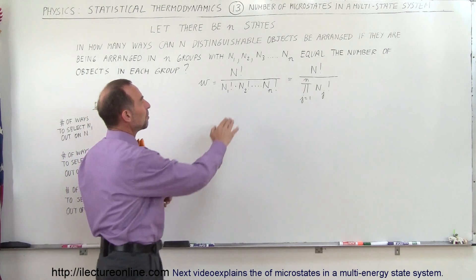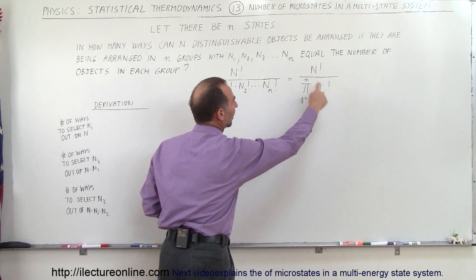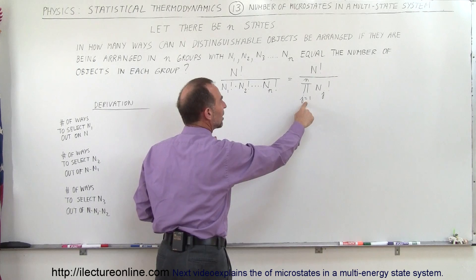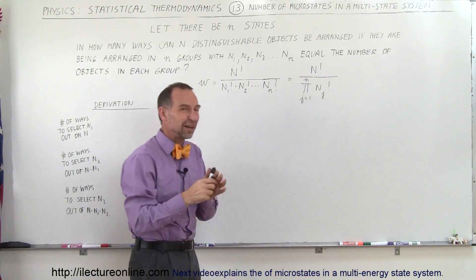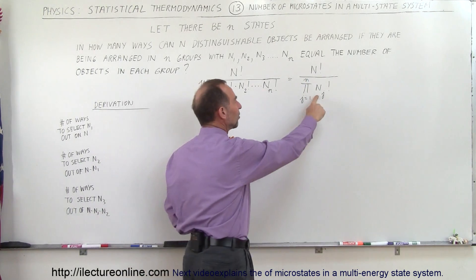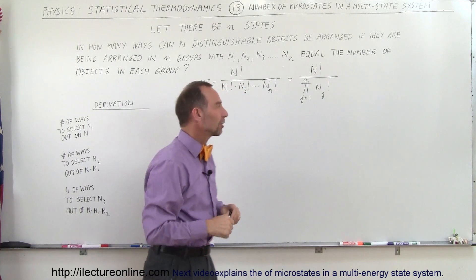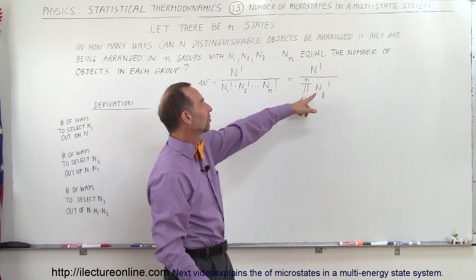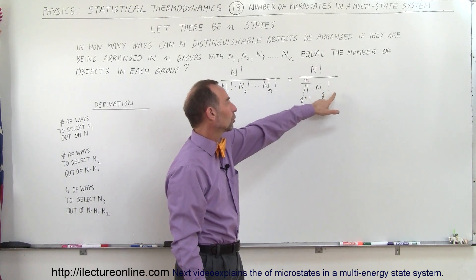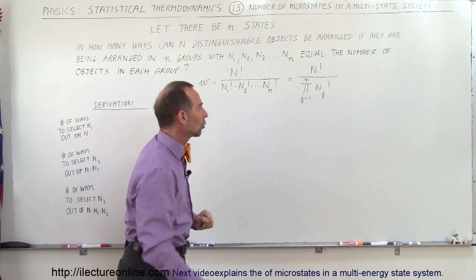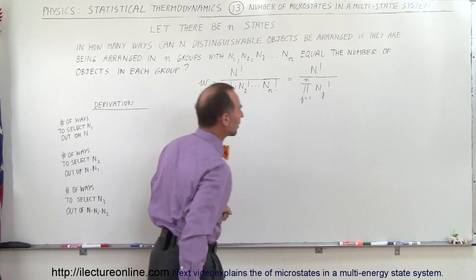In general, when we multiply n factorials like this, this can be written using a product notation from j equals 1 to n. This is a multiplication, not a sum — so it's n sub 1 factorial times n sub 2 factorial times n sub 3 factorial, all the way up to n sub n factorial. That is the symbol that represents the denominator here.